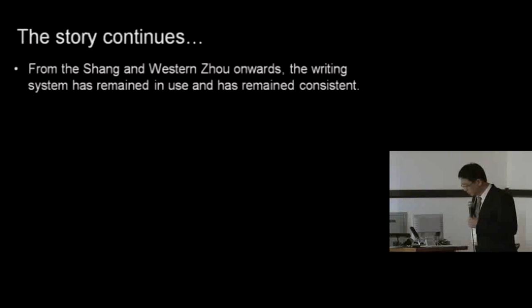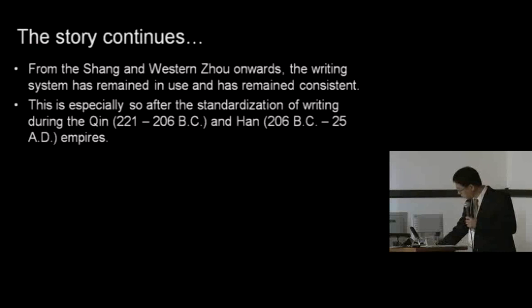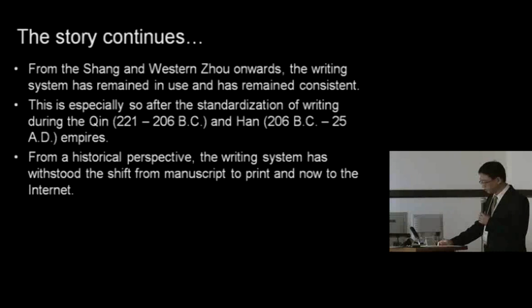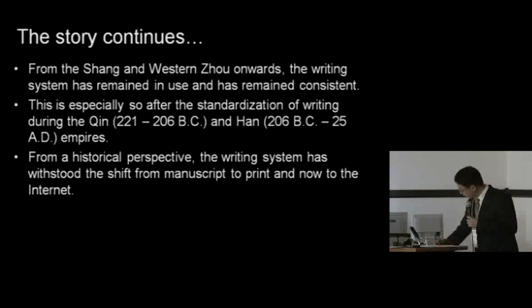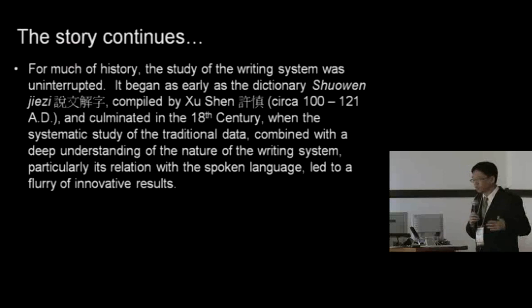From the Shang and Western Zhou onwards, the writing system has remained in use and has remained consistent. This is especially true after the standardization of writing during the Qin and Han empires. From a historical perspective, the writing system has withstood the shift from manuscript to print and now to the internet. It's also the case that for much of history, the study of the writing system has never been interrupted. It began as early as Xu Shen, writing around 100 AD.